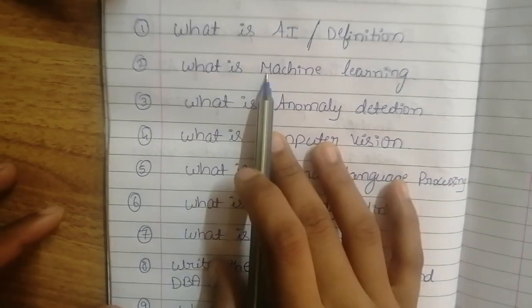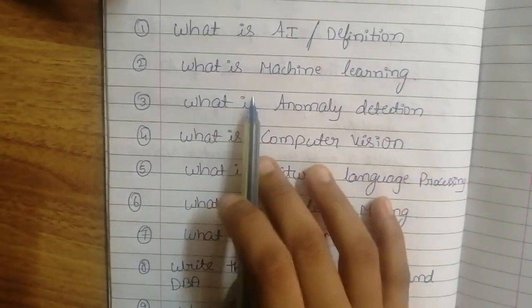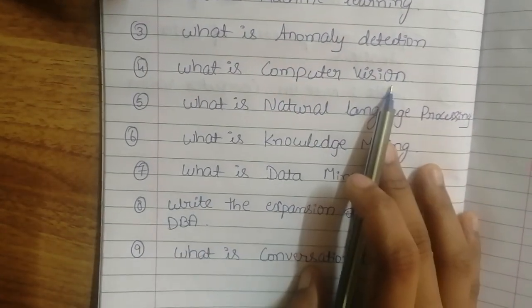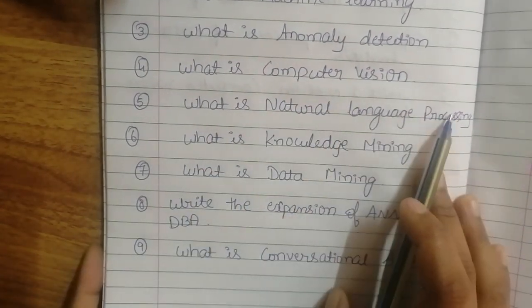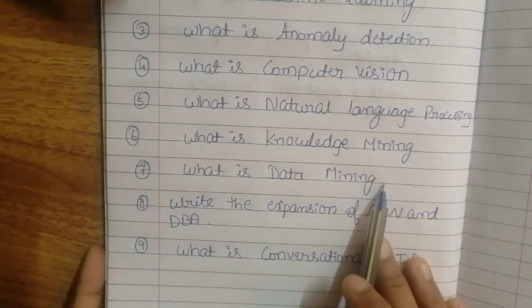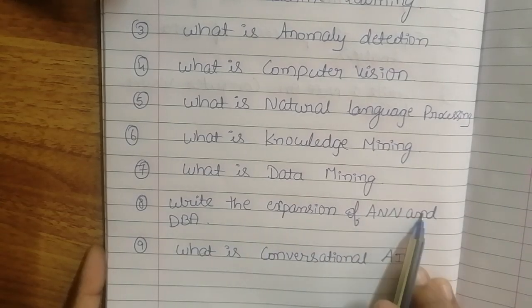Two marks: What is AI or definition of AI? What is machine learning? What is anomaly detection? What is computer vision? What is natural language processing? What is knowledge mining? What is data mining? Write the expansion of ANN and DBM.